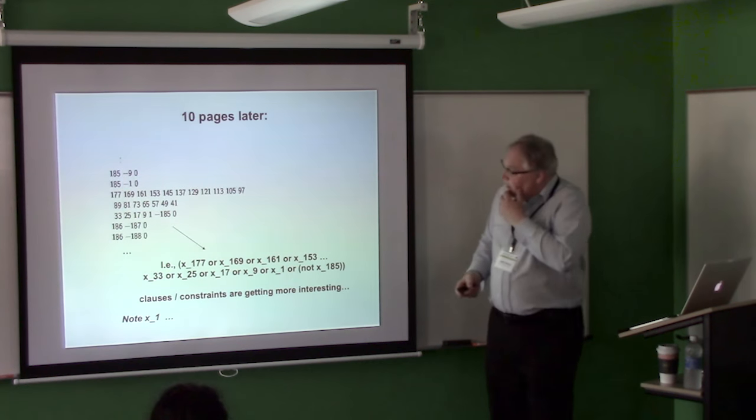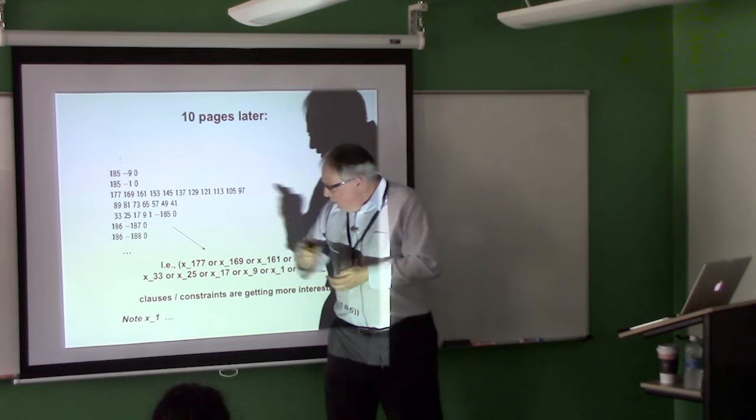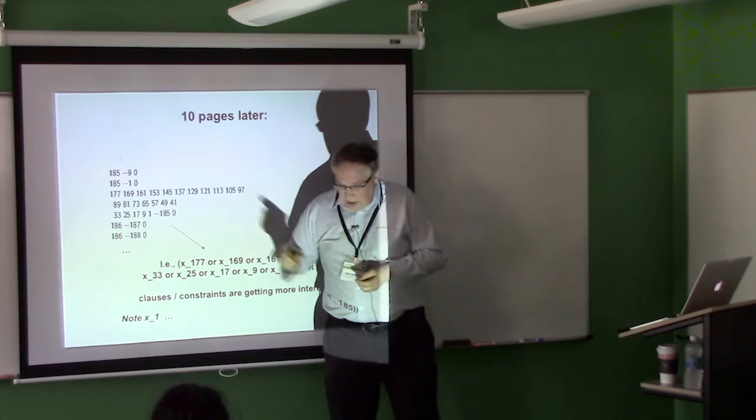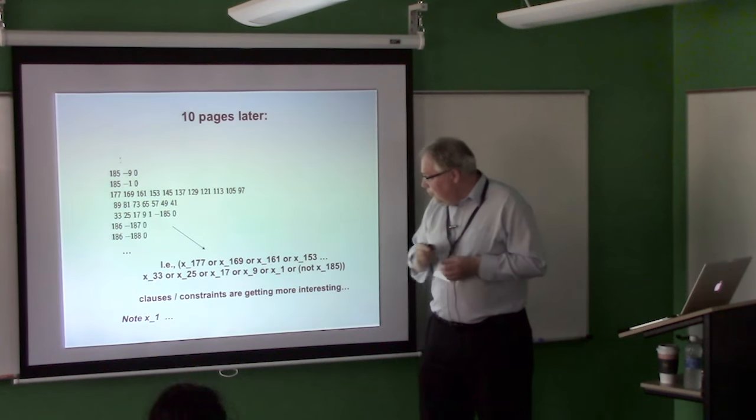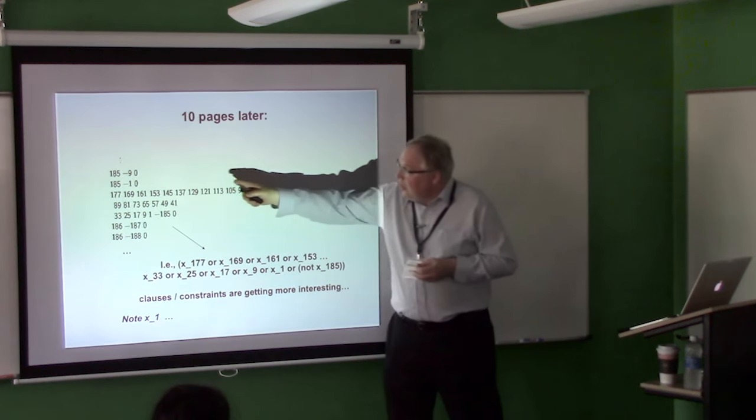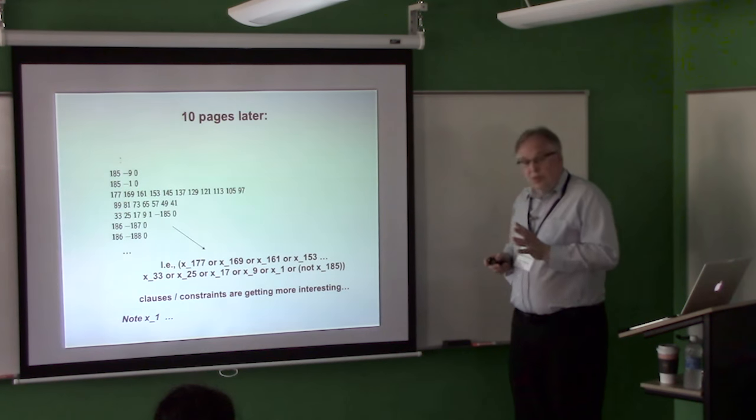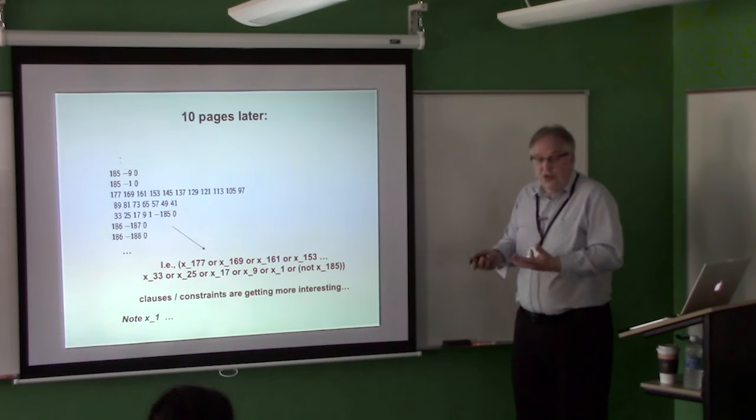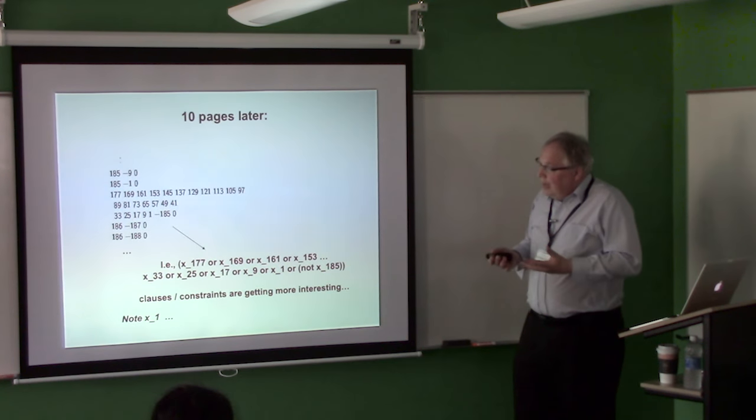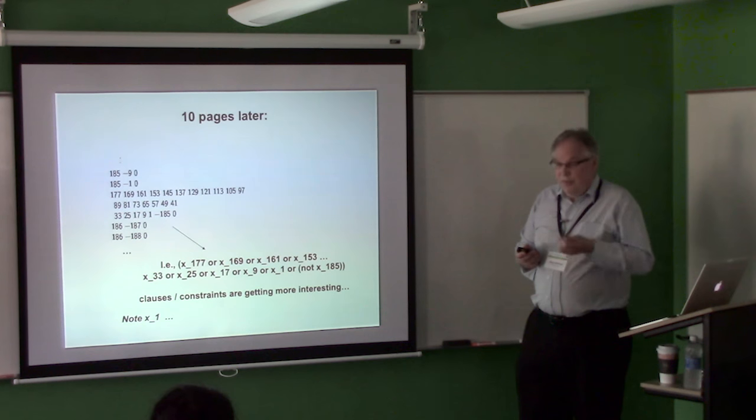So now what you see here, you see all these minus ones, so you might actually already suggest, well, maybe we should set x1 to false, then we'll satisfy those first, you know, seven, I forgot, six, seven clauses. The zeros, by the way, is just the end marker of the clause. So, now the goal is, given a set of clauses, each variable is a Boolean variable, true or false, find a setting for the variables that satisfies all these clauses, all these constraints, or show that no such setting exists. That's the goal of the Satisfiability Solver.